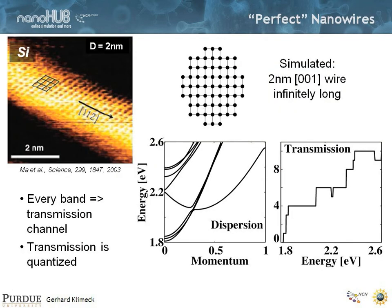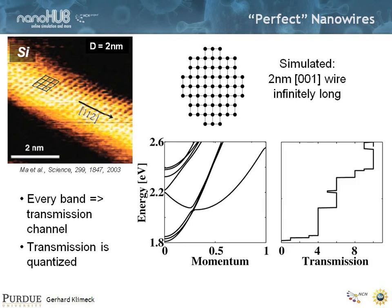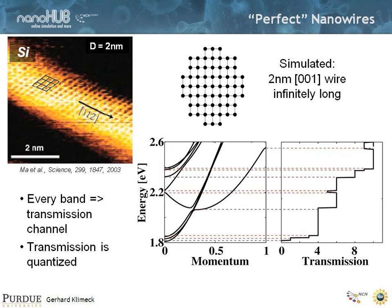So now let's look at what would happen in a wire. Here's the dispersion I've just shown. We know that for every band we would have a transmission of one — it gives you one channel in which electrons can move. Here's the transmission plot of transmission versus energy. For each little band, you pick up one channel. As you move up in energy, you get transmission coefficients where you can transmit through. For each band in a perfect nanowire, for each mode, you get one transmission. They're step-like — as soon as a new band turns on, I get more channels. When a band goes away, I get a dip in the transmission.